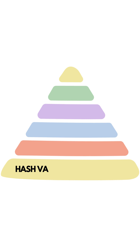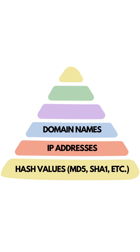At the base, we have hash values — easy for attackers to change, so not much pain. At the upper level, there are IP addresses and domain names, slightly harder for attackers to switch, causing more disruption.